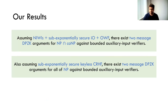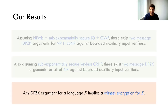If you want to go to all of NP you additionally require keyless collision resistant hash functions that are sub-exponentially secure. Given these strong assumptions, some of this seems to be inherent: if you have a DPZK for any language L, it actually implies a witness encryption for the same language, and witness encryption as we know today is only implied by strong assumptions.